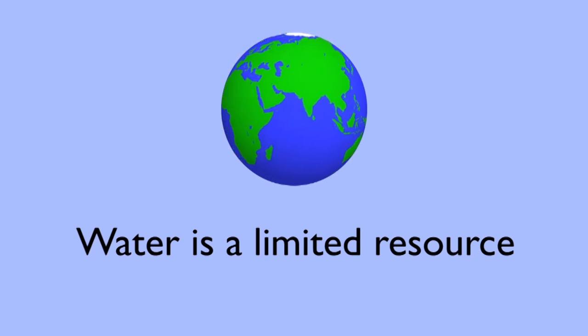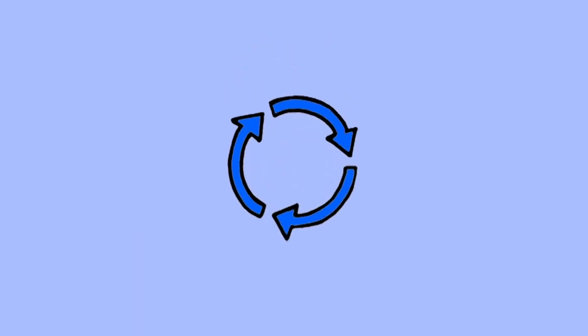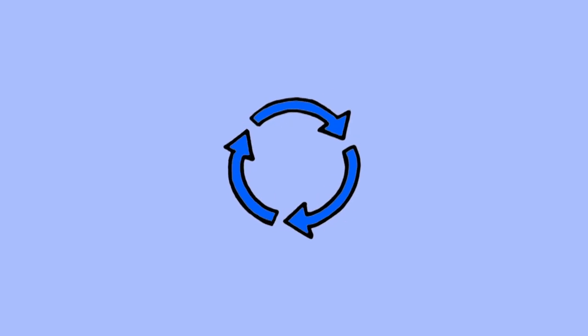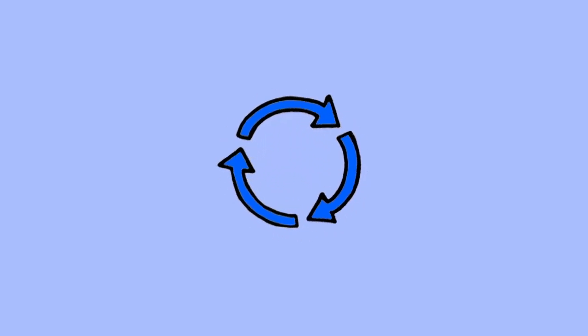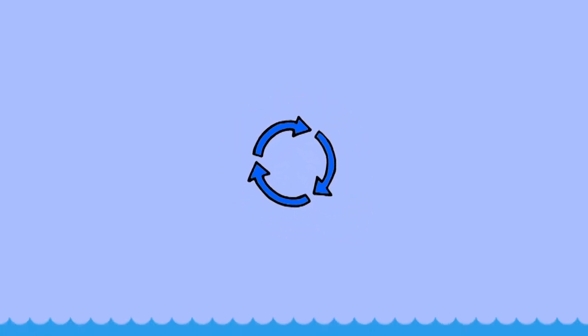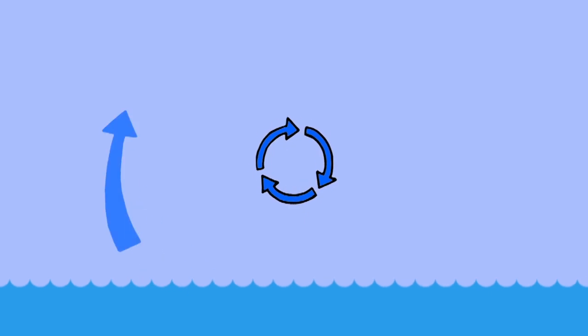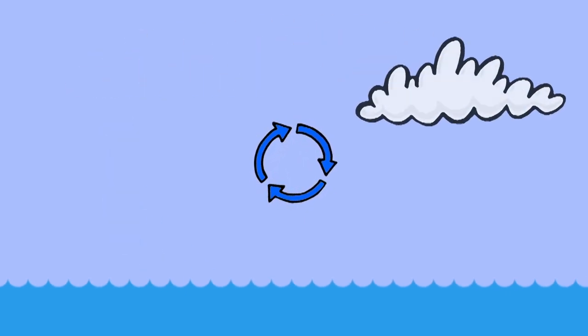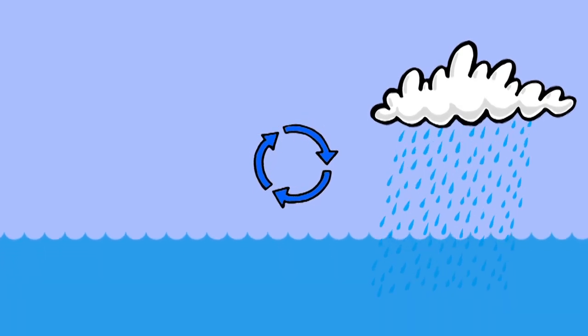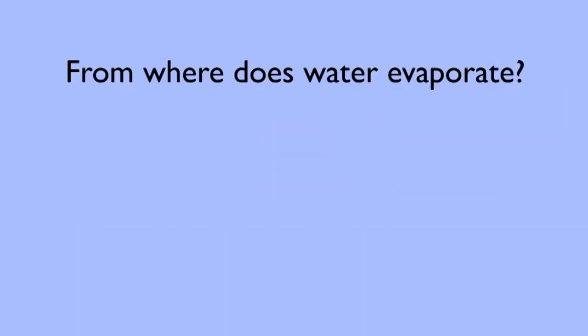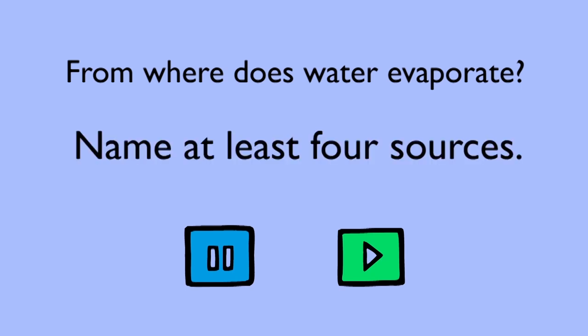It's continually being cycled round in something called the water cycle. The water cycle has a few main parts. They include evaporation, condensation, precipitation and collection. What sources of water are available for evaporation? This is where water turns from a liquid to a gas. Pause the video and try to name at least four sources.